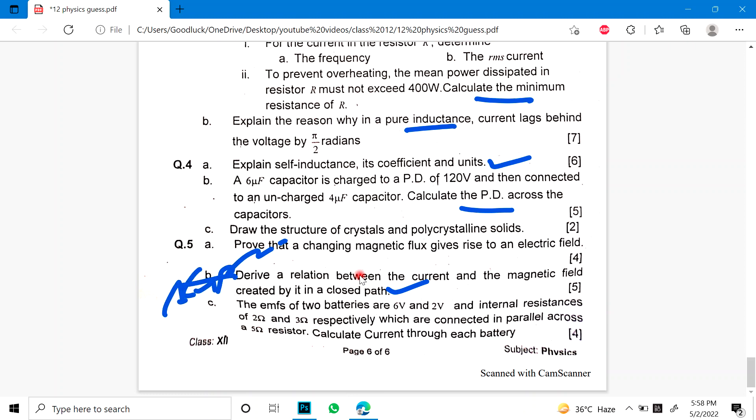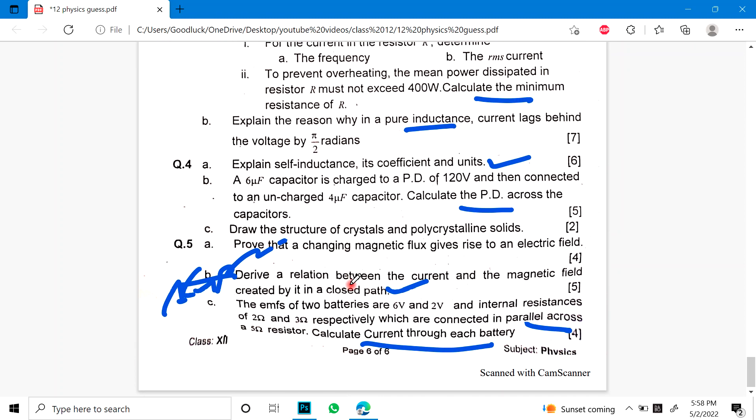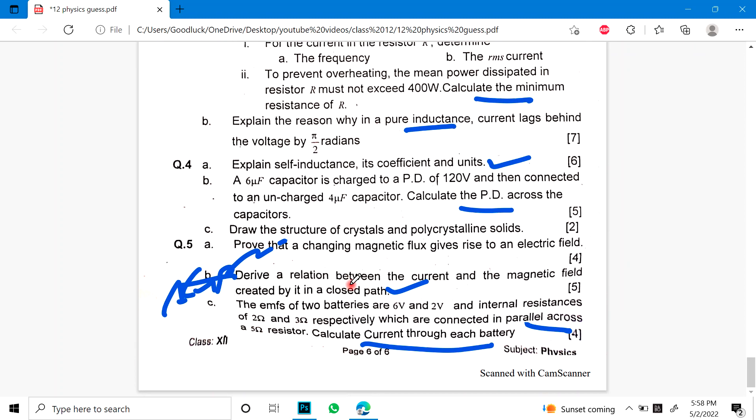And last is a numerical: The EMF of two batteries are 6 volt and 2 volt and internal resistance of 2 ohm and 3 ohm respectively, which are connected in parallel across a 5 ohm resistor. Calculate current. So you have a paper, you have the guess paper. Then you will have to prepare, then you will have to apply, to go through the bill. Okay please.